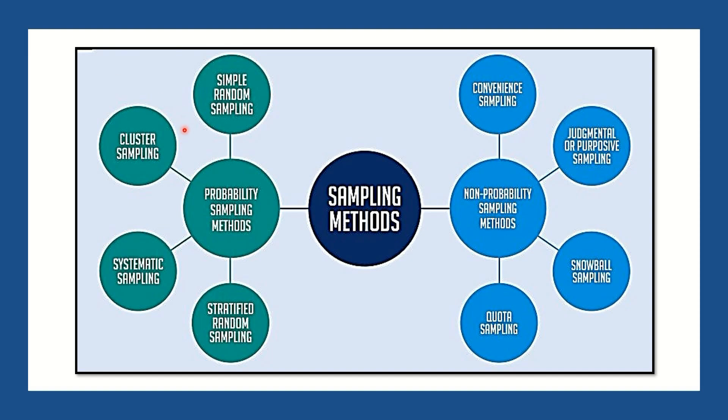As you can see on our given figure, we have two types of sampling methods. The first type is the probability sampling methods, which is also divided into four types: simple random sampling, cluster sampling, systematic sampling, and stratified random sampling. The second type of sampling method is the non-probability sampling methods, and also it is divided into four: the convenient sampling, the purposive sampling, the snowball sampling, and the quota sampling. These are the sampling methods that we will be discussing for today.